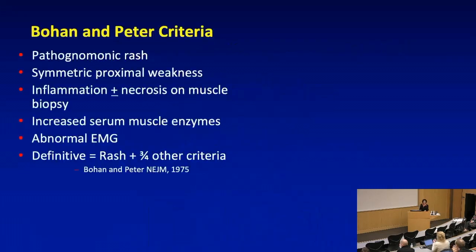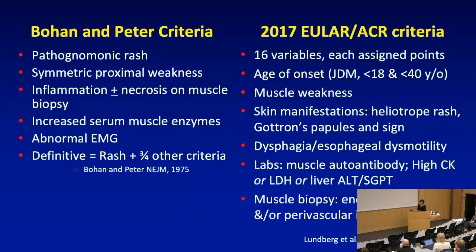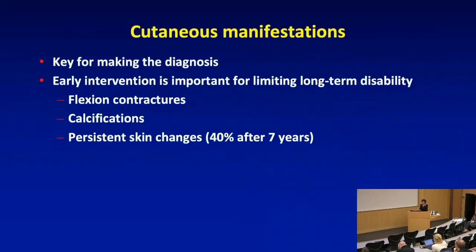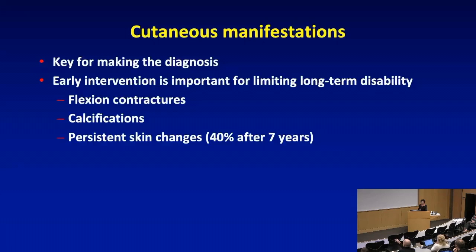You've already seen the old Bohan and Peter criteria, and now the new EULAR criteria. The new criteria really do allow more focus on some of the skin manifestations and include them specifically. The cutaneous manifestations are very important in making the diagnosis, and it's often the dermatologist who is able to identify this as a pattern of dermatomyositis, get that child in for additional testing and, ideally, early intervention.